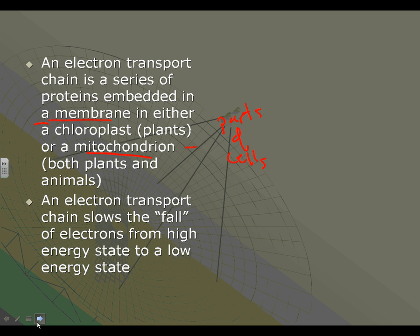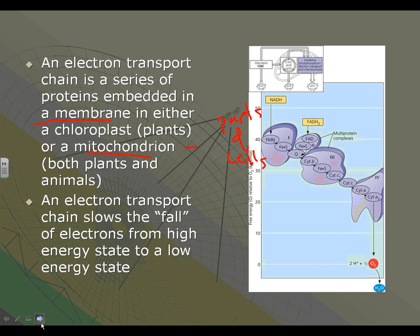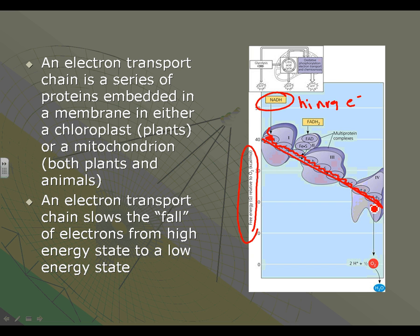An electron transport chain slows the fall of electrons from a high energy state to a low energy state. This is a sketch out of your textbook of an electron transport chain, and this thing right here is something that carries high energy electrons. And those high energy electrons are dropped off here, they're dropped here, and then they're passed along. And they're shown on this angle - this talks about the amount of free energy in those electrons. So those electrons have this much free energy and they fall to a lower free energy state.